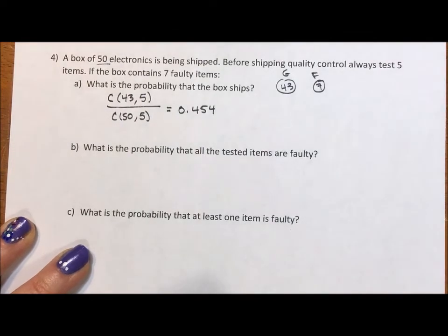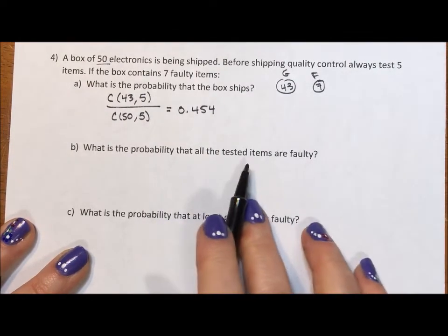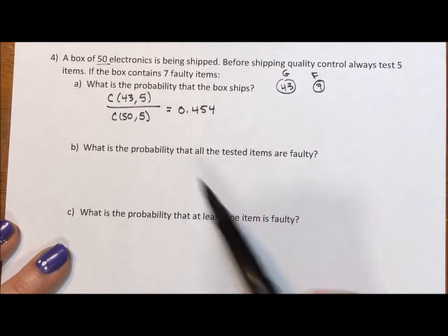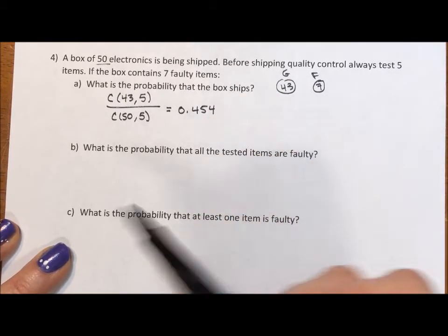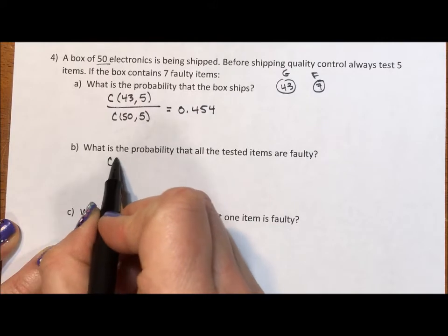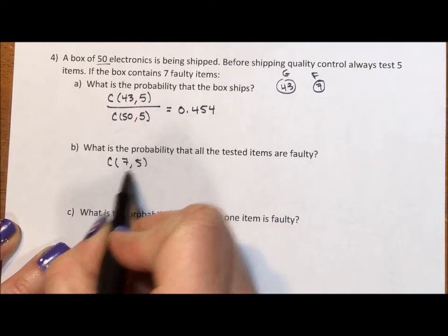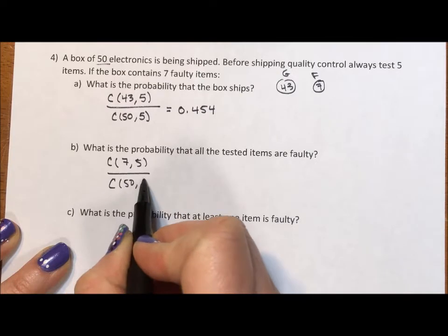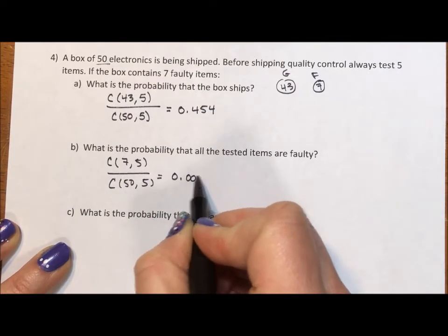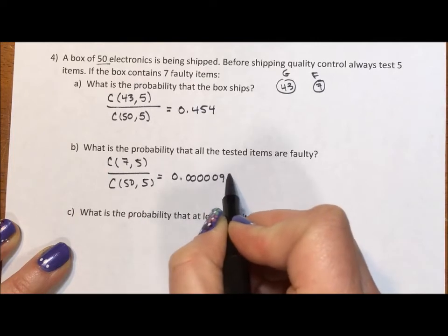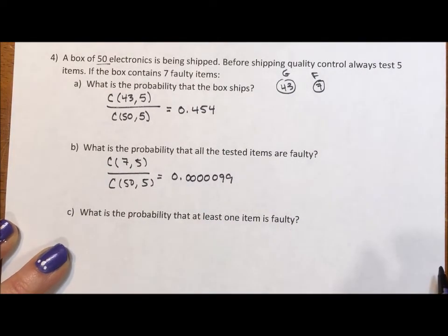Okay, so what is the probability that all the tested items are faulty? So one category is all good, another category is all faulty. So this is the one where we take the seven faulty five at a time divided by the 50 possible five at a time and we get a total probability of 0.000099, which isn't very likely.